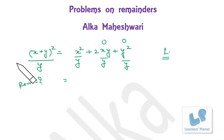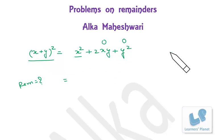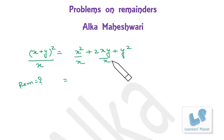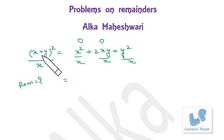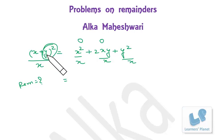Similarly, if (x+y)² is divided by x: x² is a multiple of x so remainder is 0, and 2xy is a multiple of x so remainder is 0. But y² — we cannot say whether it is a multiple of x or not — so the remainder will be y². That means (x+y)² divided by x gives remainder y².